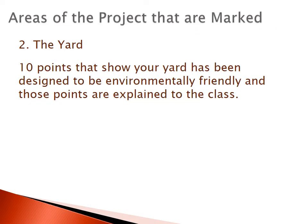The second category is the yard. You want 10 to 12 points showing your yard has been designed to be environmentally friendly, and those points are explained to the class. This may also include items or tools that you will use to maintain your yard.